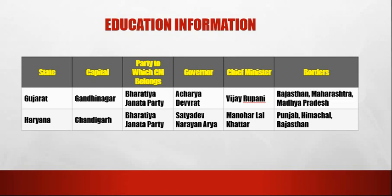The next state is Gujarat. The capital of Gujarat is Gandhinagar. The party to which the CM belongs is Bharatiya Janata Party. The governor is Acharya Devvrat. The chief minister is Vijay Rupani. The borders are Rajasthan, Maharashtra and Madhya Pradesh.